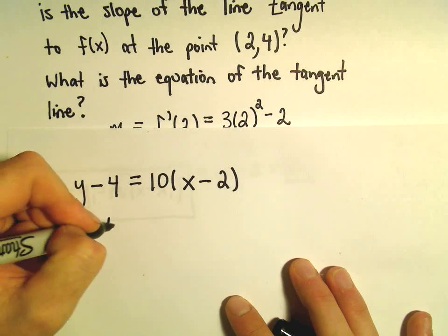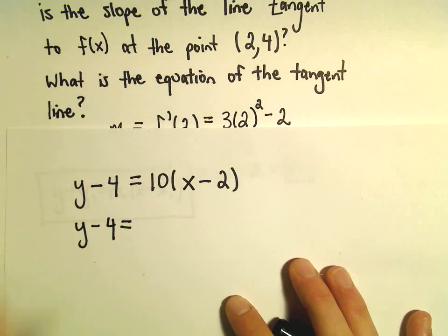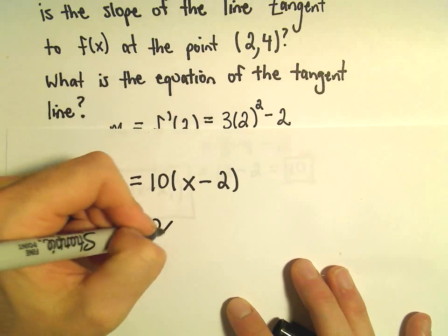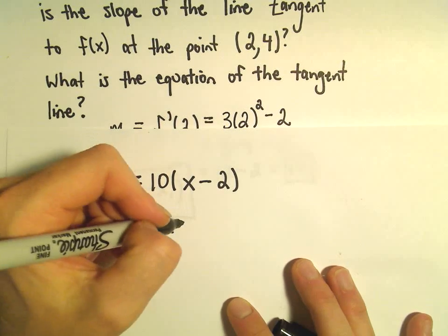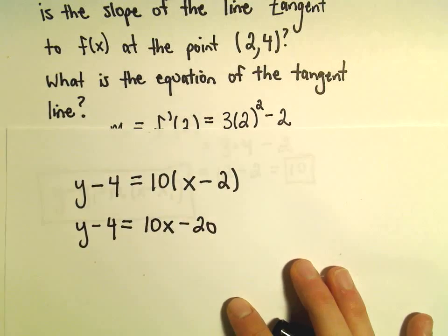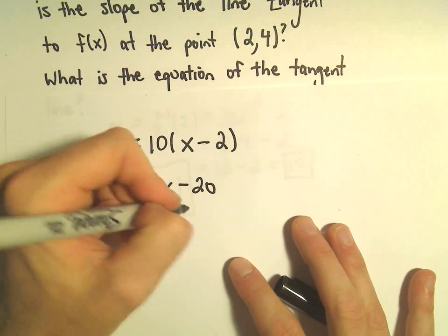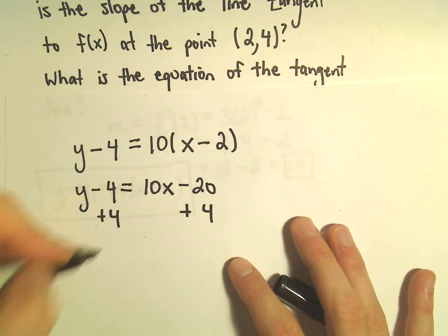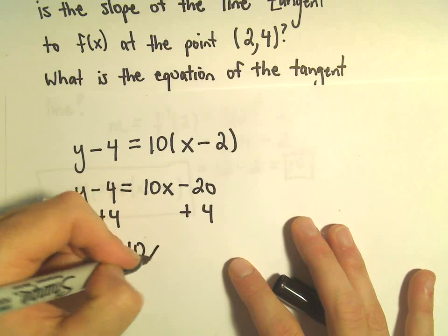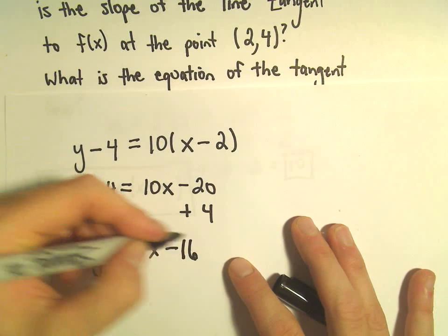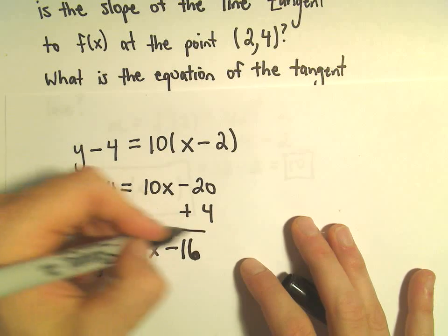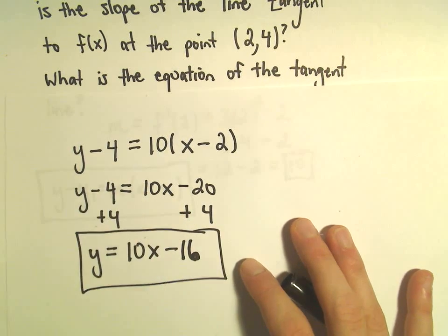If you want to, we can always put this in slope-intercept form. So if we distribute the 10, we'll get 10x. 10 and negative 2 would be negative 20. We can add 4 to both sides, and then we'll simply be left with y equals 10x minus 16 as the equation of our tangent line.